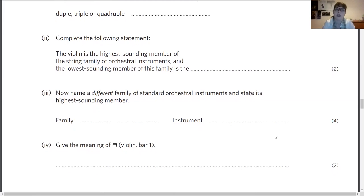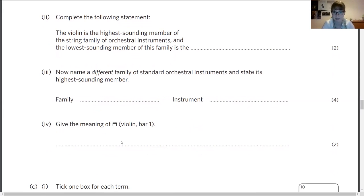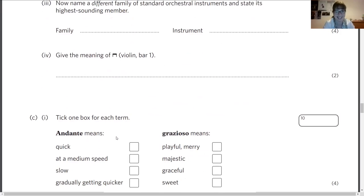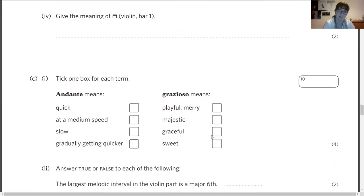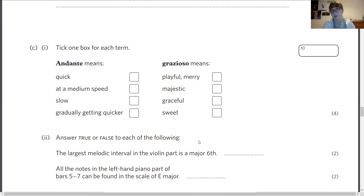For the next part: name a different family of standard orchestral instruments and state its highest sounding member. A different family of standard orchestral instruments, so anything that's not strings, basically. They want you to give the highest sounding member of that family. There's more than one answer here, but go with what you're most confident about. Don't try and be extra fancy, there's no need to do that. As long as you name a family that's not strings and give the right highest sounding member, then you're fine. Part four: give the meaning of that little bracket in the violin part. If you're a string player, you've got an advantage. Have a guess.